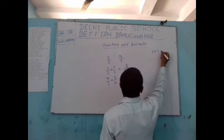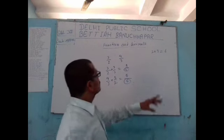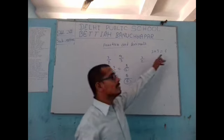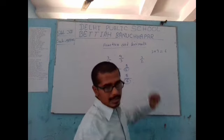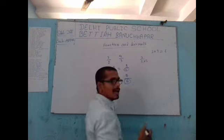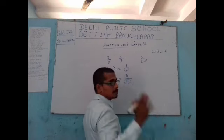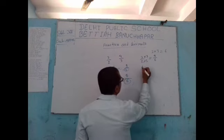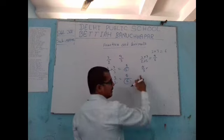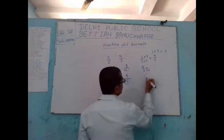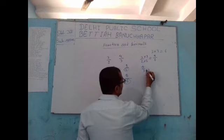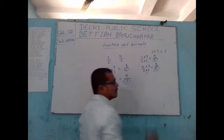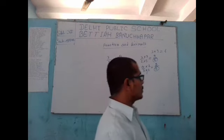The second method is taking the LCM of the denominators. The LCM of 2 and 3 is 6. So we make the denominator of both fractions equal to 6. For 3 by 2, multiply numerator and denominator by 3 to get 9 by 6. For 4 by 3, multiply numerator and denominator by 2 to get 8 by 6. Both denominators now become 6, converting them into like fractions.